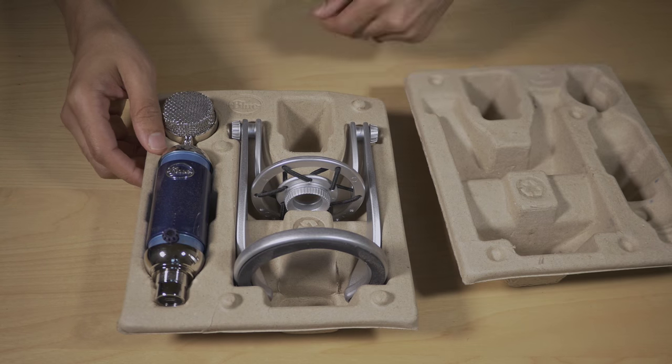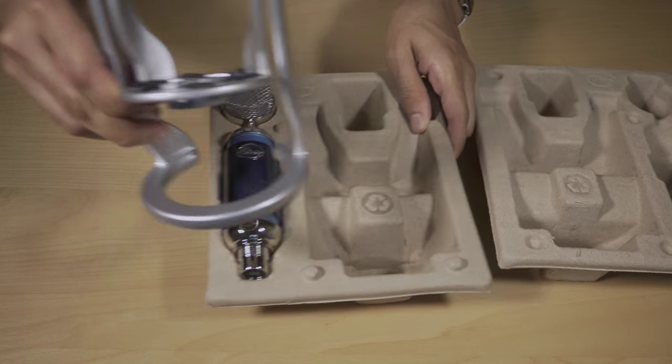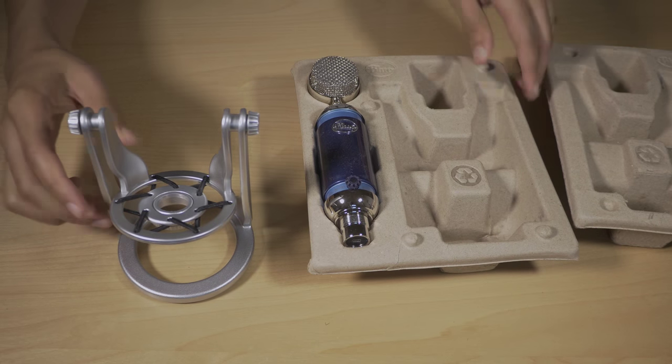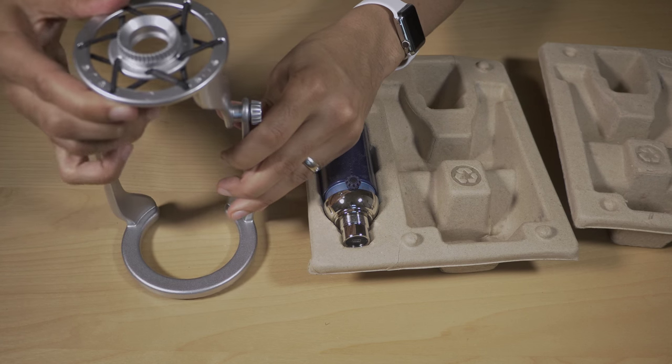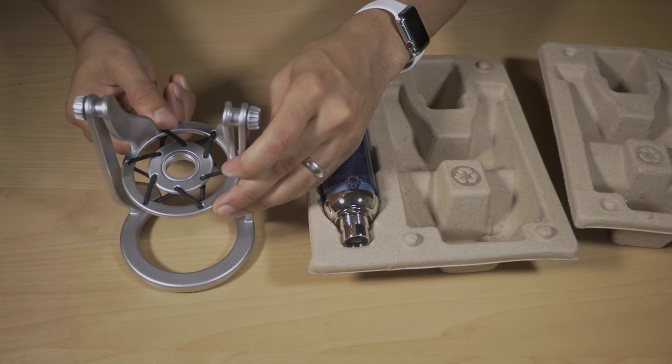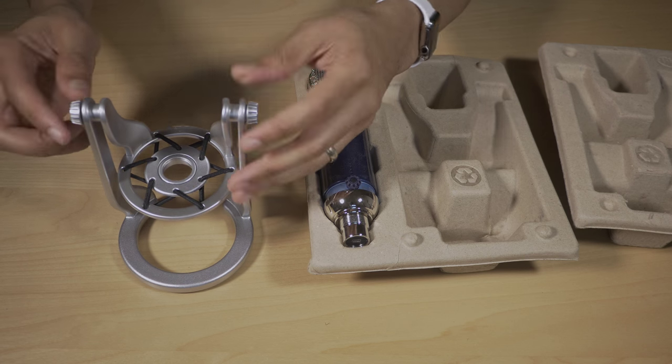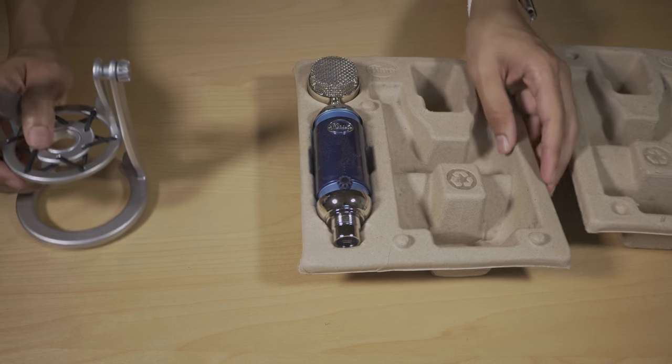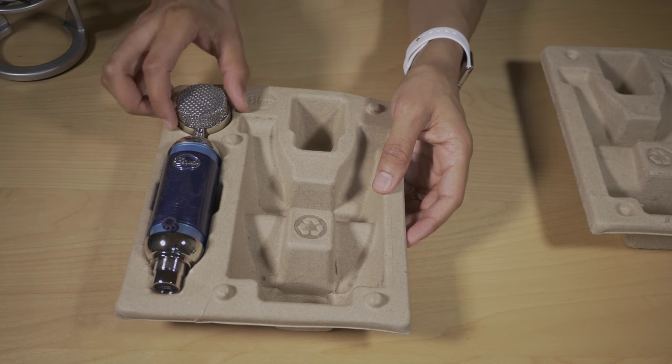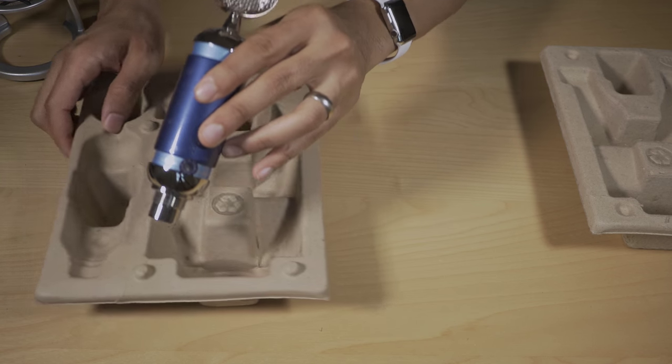The stand that comes with this device has a built-in shock mount, which is very convenient. It means you don't have to purchase a separate shock mount - everything's in the box. The microphone screws right into the stand and sits in the shock mount itself. The benefit is a quick and easy setup; it's ready to go pretty much instantly.